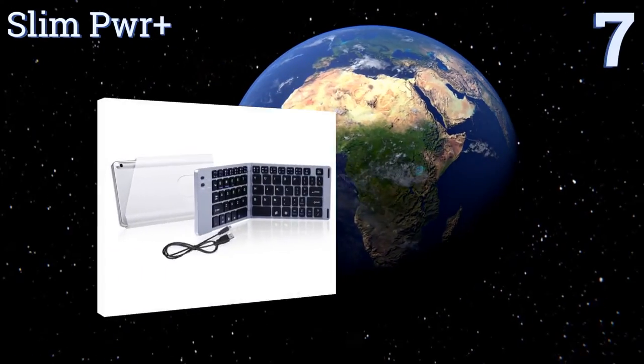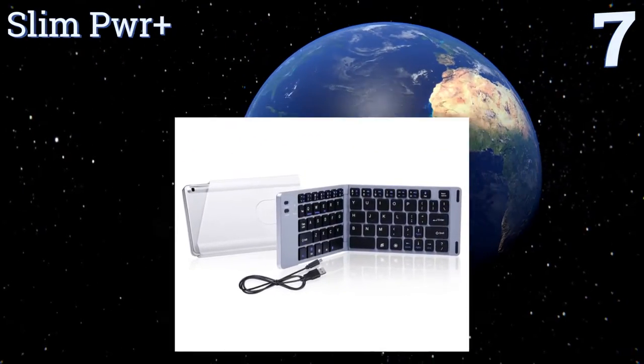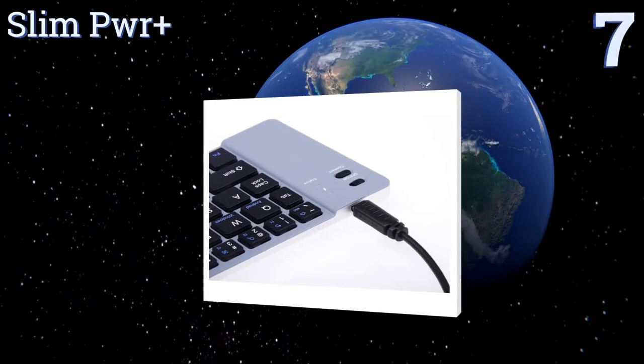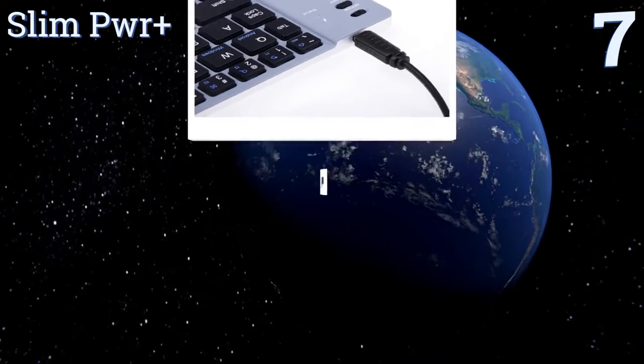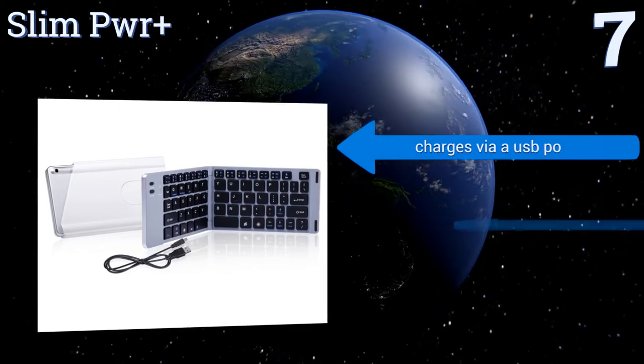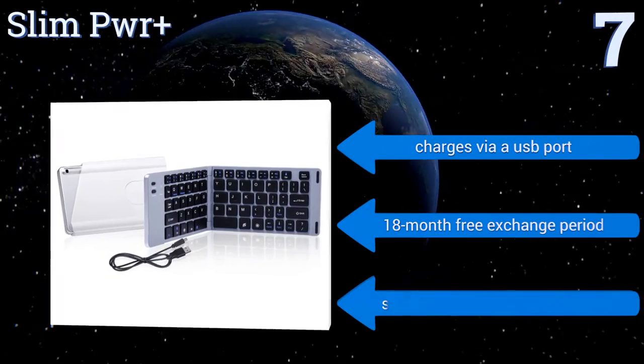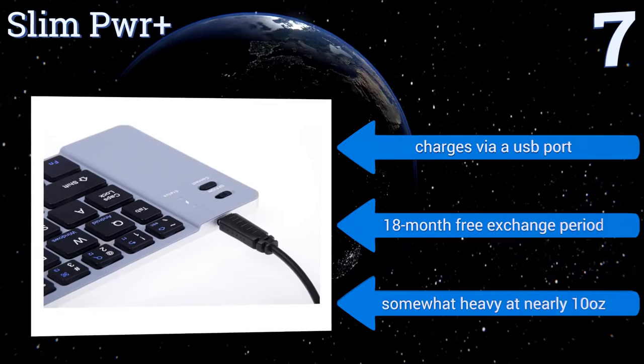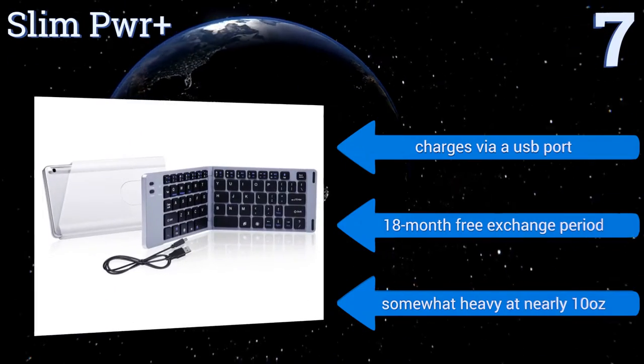At number seven, the Slim Power Plus pairs quickly with a variety of Bluetooth-equipped tablets and other mobile devices. It has a number of helpful shortcut keys to control your media, take you to the Windows home screen, display your on-screen keyboard, and more. It charges via a USB port and comes with an 18-month free exchange period, but it is somewhat heavy at nearly 10 ounces.